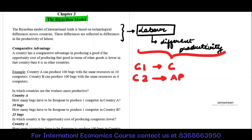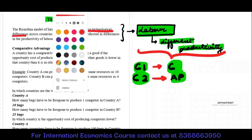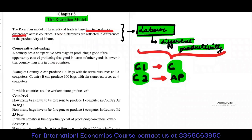When we say that the productivity of labor differs, it differs across countries. It also differs across products. But we are only talking about labor for now. The Ricardian model is based on technological differences, and it says that the same labor can have different productivity in different countries.